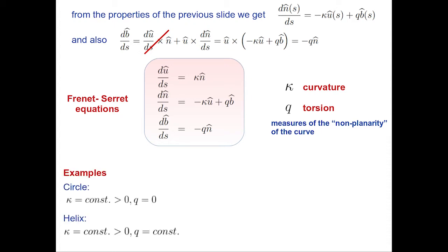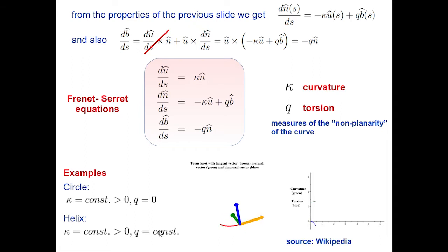Two simple examples: for a circle, κ = 1/R (constant, where R is the radius) and q = 0, since a circle is planar. For a helix — a circle combined with motion in the third direction — κ is also a positive constant, and q (the torsion) is a nonzero constant that can be positive or negative.